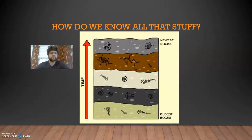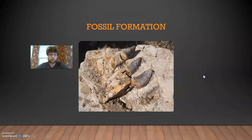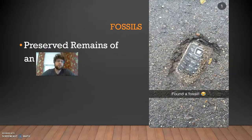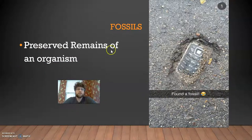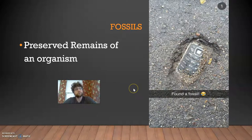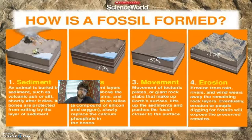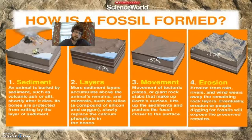So how do we know all that stuff? How do we have all this information about how life was a long time ago when we weren't around and don't have a time machine? Well — fossils. We're going to start with fossil formation. Fossils are preserved remains of an organism. Here's a cell phone fossil — this is a brick I had in high school; the only things I could do were make phone calls and play Snake.